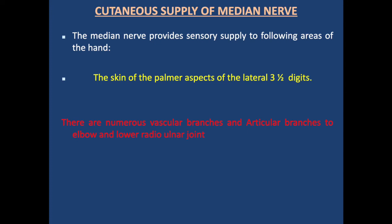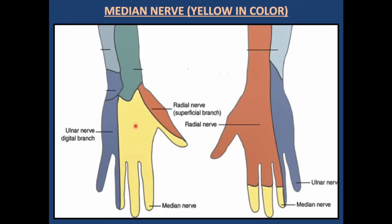The median nerve provides sensory supply to the palmar aspect of the lateral three and a half digits, and has numerous vascular and articular branches to the elbow and lower radial nerve joints. This diagram shows the median nerve in yellow. On the palmar surface it supplies three and a half fingers; on the dorsal surface it supplies the nail bed area and almost half of the dorsal surface of the ring finger. Please remember there is always overlapping of the cutaneous nerves.